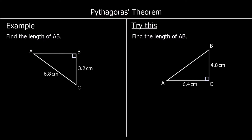Pythagoras' theorem says that a squared plus b squared equals c squared, where a and b are the two shorter lengths and c is the hypotenuse, the longest side of a right-angled triangle. So the two shortest sides squared and added together are equal to the longest side squared.